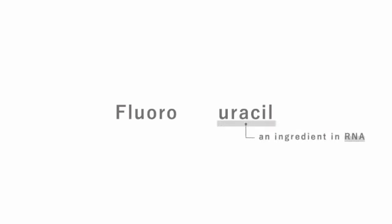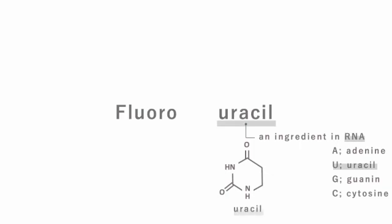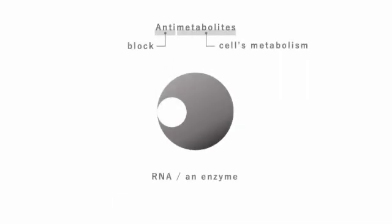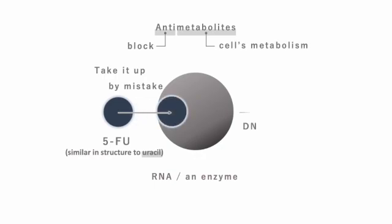5-FU is an anti-metabolite that imitates uracil, a constituent of RNA. The molecular structure of 5-FU is similar to that of uracil. Cells mistakenly incorporate 5-FU instead of uracil, resulting in disrupting their vital processes.